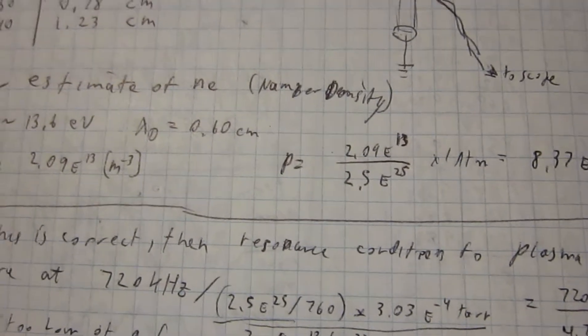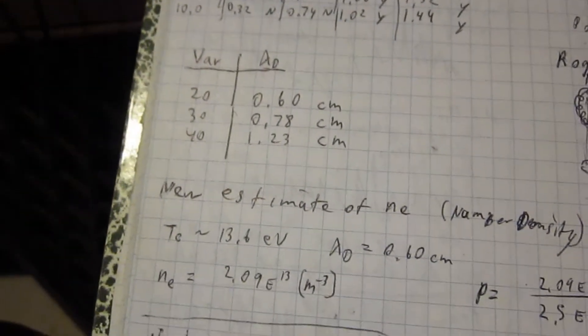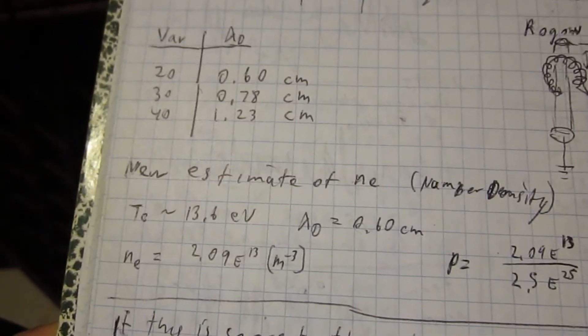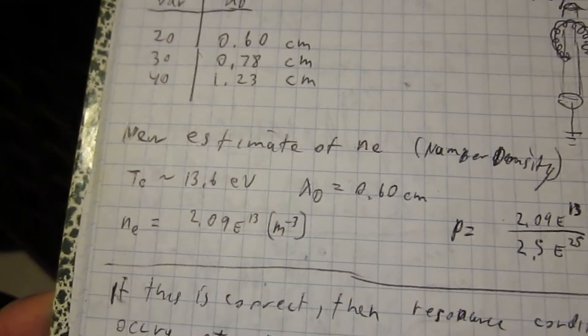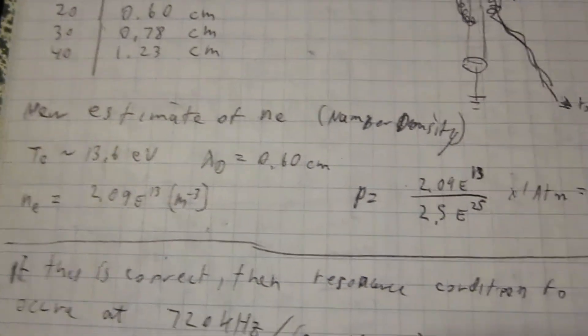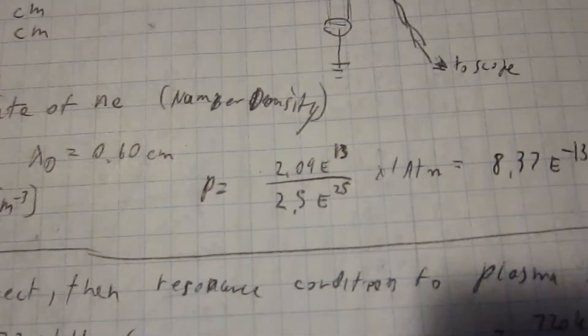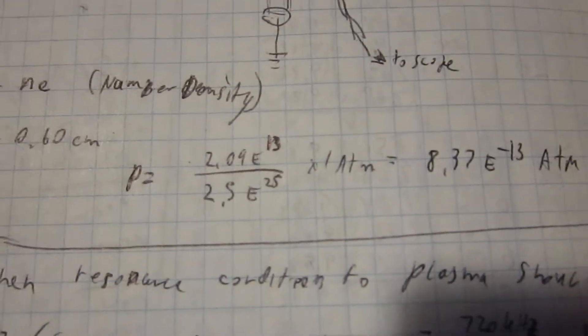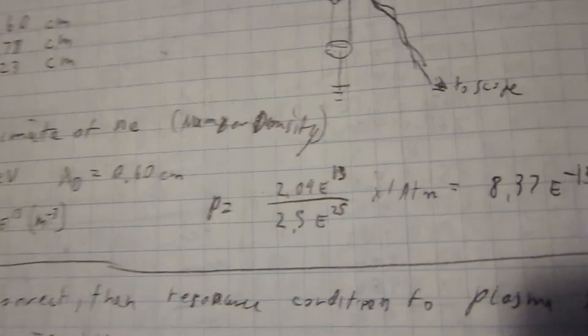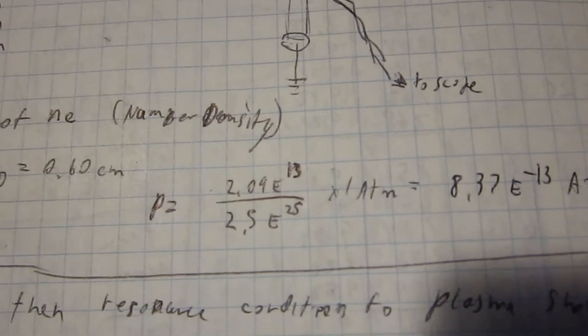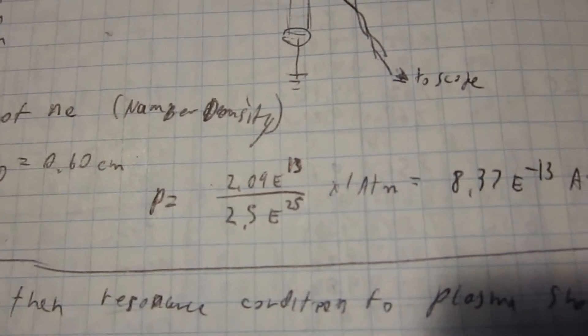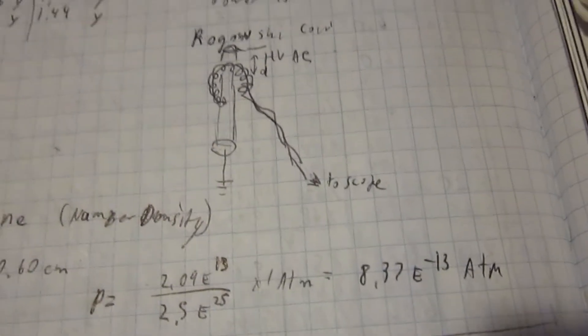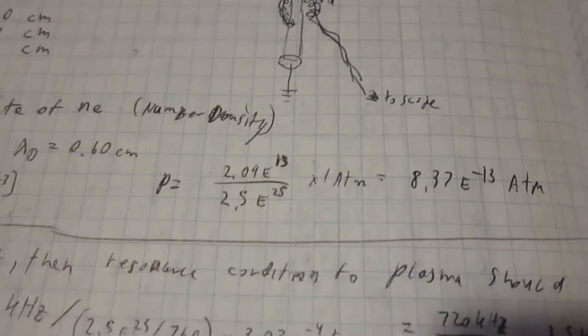If that estimated Debye length is correct and these other assumptions about the energy are also correct, then we're looking at a number density that is significantly lower than atmospheric pressure. And so then I would expect that the ions should be able to reach pretty much full energy before they collide with something. And so we should get fusion in this system.